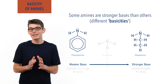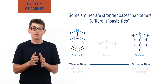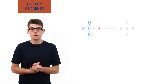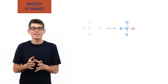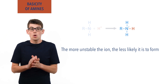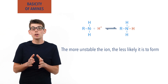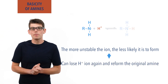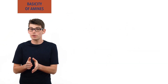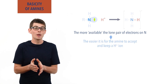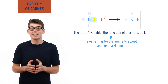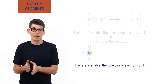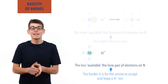The ability of an amine to act as a base comes from that nitrogen atom and its lone pair of electrons. When the nitrogen atom accepts a H+ ion, a positively charged ion is formed. The more unstable this ion is, the less likely it is to form or remain as an ion. Remember, accepting H+ ions is a reversible process, and if the ion formed is very unstable, it can simply lose the H+ ion again and the amine can reform. The more available the lone pair of electrons is on the nitrogen atom, the easier it is for the nitrogen to accept and hold on to a H+ ion, increasing the amine's ability to act as a base. The less available the lone pair of electrons is, the harder it is, decreasing the amine's ability to act as a base.